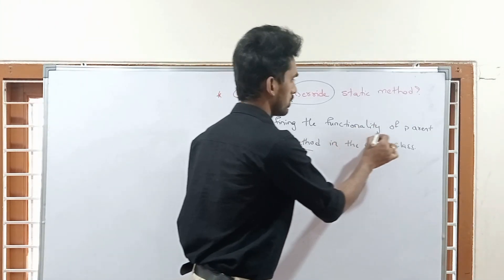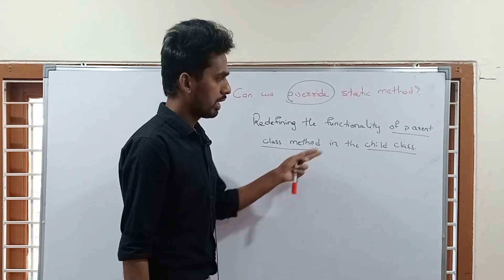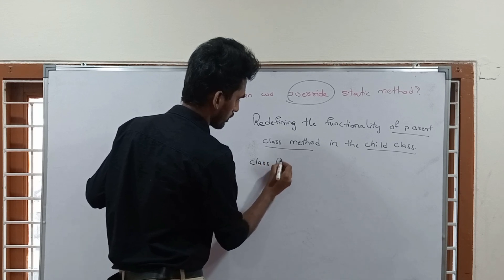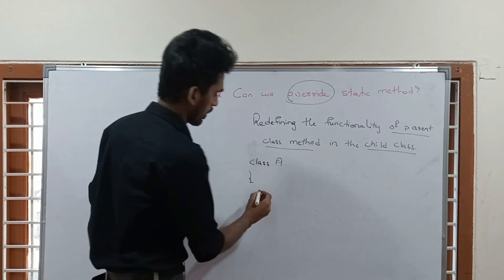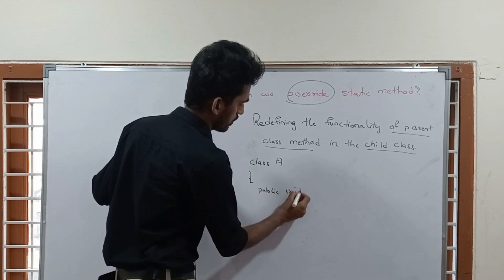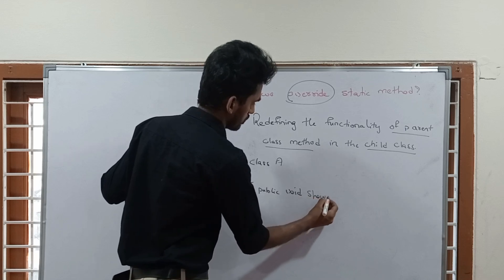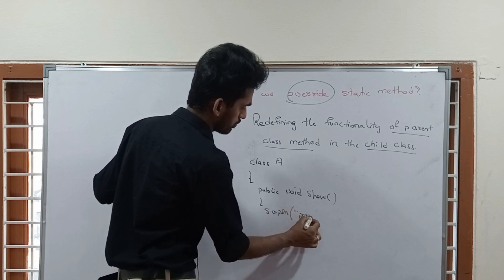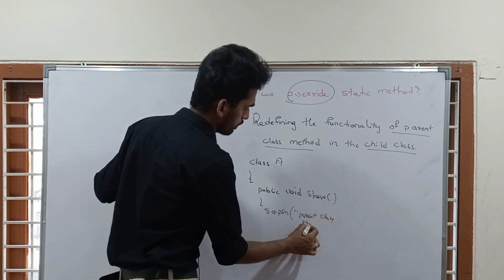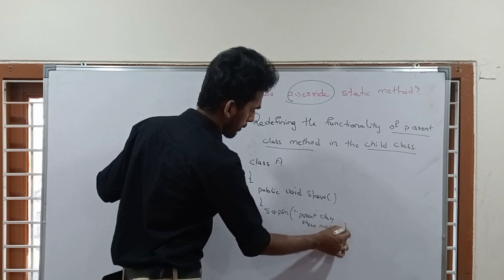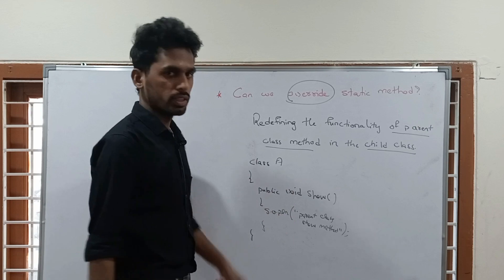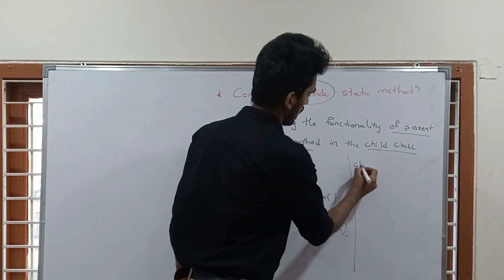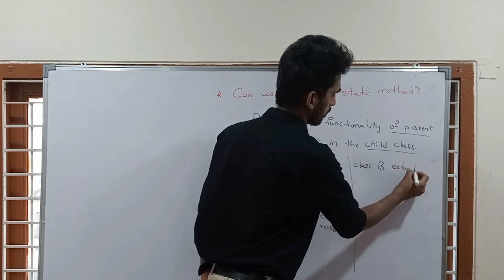There is one parent class and one child class. We are redefining the functionality. Let me take one class - class A - and in this class there is one method: public void show(). Inside it, I will write System.out.println('parent class show method'). So this is the parent class method. The method name is show. Now let me take one child class - class B extends A.